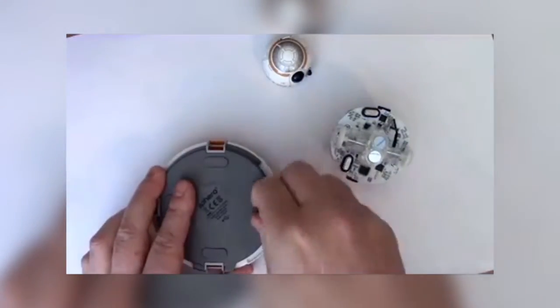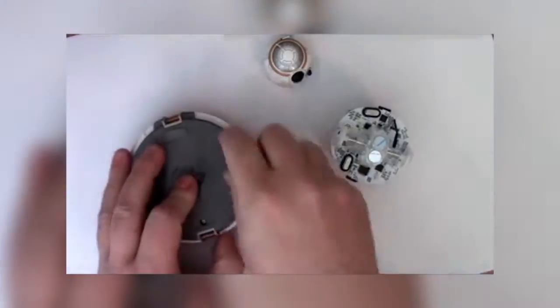And that separates the electronics and mechanics from the shell. Let's start with the BB-8 base. Start by removing the four screws that hold the base together.